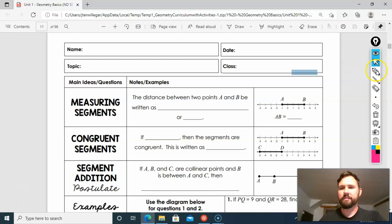Hey there Geometry Cats, Geometry Cats and Kittens. Today we are going to be looking at 1.1, we're going to call it B. We're going to be looking at measuring segments.